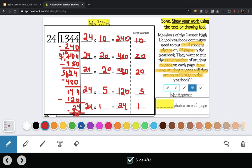So now I have to add up my partial quotients here. First I put 10 photos on 24 pages, then 20, then 20, then 5, then 1. 10, 20, 40, 45, 56. So that means 56 photos can go on each page.